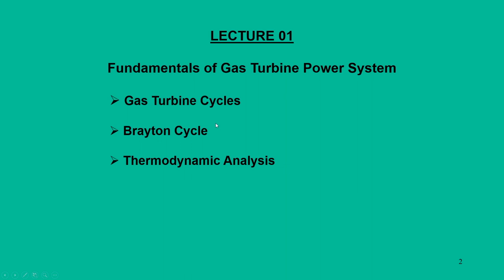Let us start this first lecture. We will touch upon fundamentals of gas turbine systems and emphasize on gas turbine cycles — various gas turbine cycles that are possible. One important thing is that for gas turbines, the reference cycle is the Brayton cycle. For example, for steam power systems, the reference cycle was the Rankine cycle. Similarly, for gas turbines, the corresponding ideal reference cycle is the Brayton cycle.